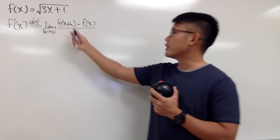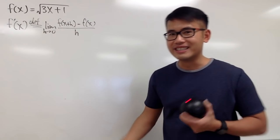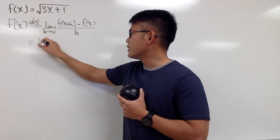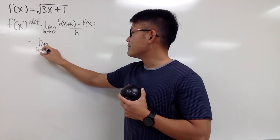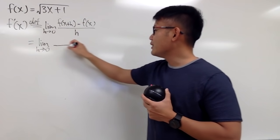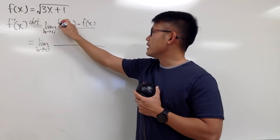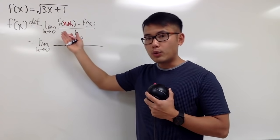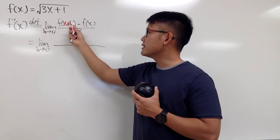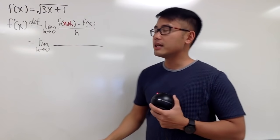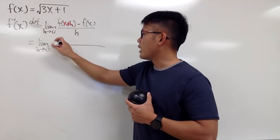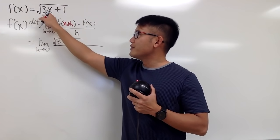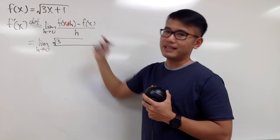Now we just have to do some algebra to see what we get. We get the limit, and here f(x+h) — this x+h is our new input. All I have to do is plug this into x. So for this part, we will have the square root, and then the 3. But instead of x, you open the parentheses and put down x plus h.